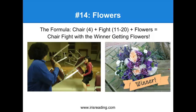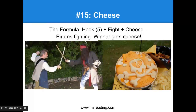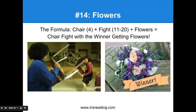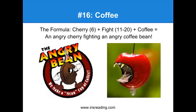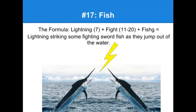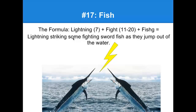Fourteen: we start with the chair and we know there's a fight — it's a chair fight, and the winner from this fight gets a lovely bouquet of flowers. Number 15: hook plus fight plus cheese equals pirates fighting, and the winner gets cheese. Maybe pirates like cheese because it's similar to the color of gold. Sixteen is coffee: six was cherry plus fight plus coffee — an angry cherry fighting an angry coffee bean. Seventeen was fish: lightning plus fight plus fish — lightning striking some swordfish as they jumped toward each other, fighting with their swords. Electrocuted by the lightning. Poor fish.